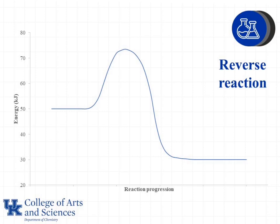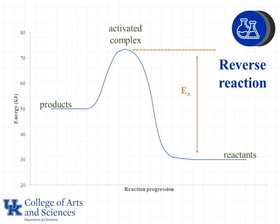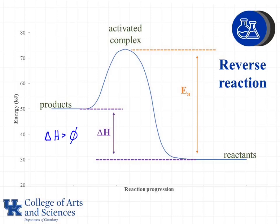We can also use the same reaction curve, but consider the reverse reaction. In this case, we're starting on the right side of the curve, treating the right side as our reactants. The left side is our products, and what's present at the peak in the middle is the activated complex or transition species. Because we're starting on the right side of the curve, the activation energy is different, since it always starts from the reactants and goes to the peak of the activated complex. So we have a different activation energy for the reverse reaction. The magnitude of delta H will be the same, but in this case it will be products minus reactants, so delta H will be greater than zero.